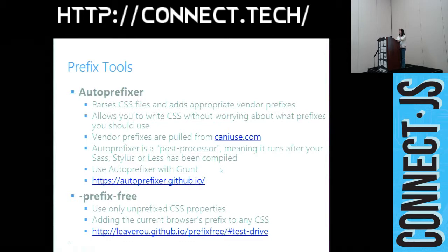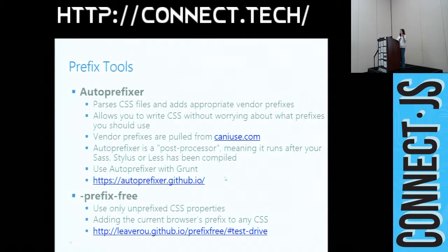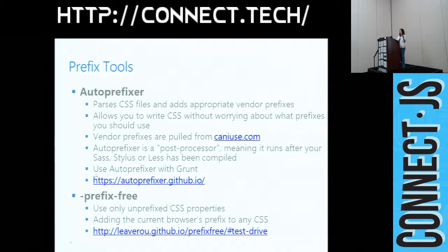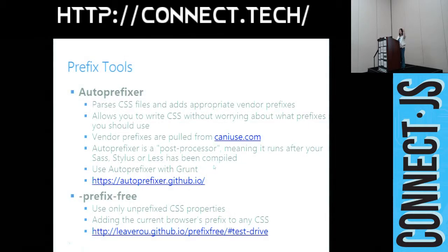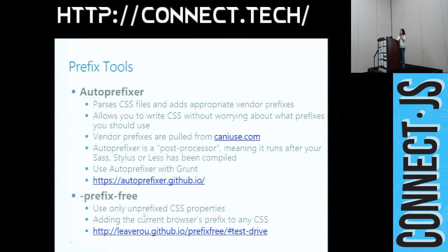Let's use auto-prefixer as an example. You can use it in an online version, and the whole code base is on GitHub. You can even embed it in your Grunt build script — that's actually a very common practice. The tool generates all the prefixes using caniuse.com as a reference. There's a similar tool called prefix-free that does similar things.